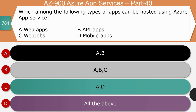Next question — which among the following types of apps can be hosted using Azure App Service: web apps, API apps, web jobs, or mobile apps? The right answer is all of the above. App Services can host web apps and API apps consumed by other applications, web jobs, and mobile apps which may consume the exposed APIs. The right answer is option D, all of the above.